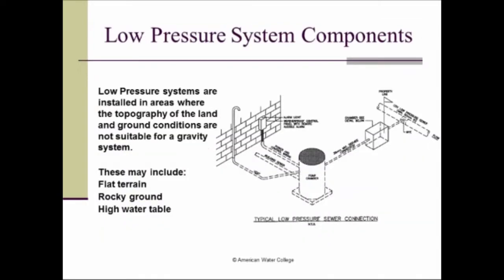First, the low pressure systems are installed in areas where the topography of the land and ground conditions aren't suitable for a gravity system. Reasons for this might be that the terrain is very flat so that the sewer lines would continue to get deeper and deeper.